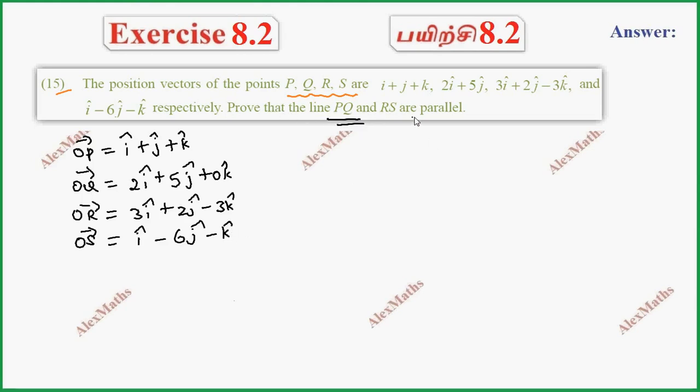Now, line PQ and RS are parallel. To find PQ vector, we calculate OQ minus OP.